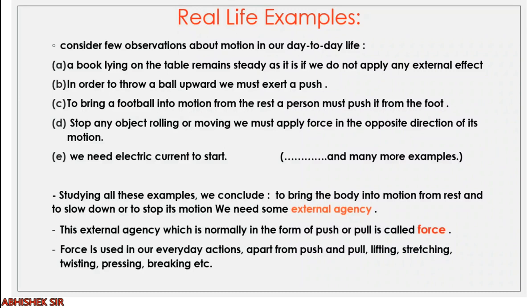To stop any object that is rolling, or to stop it from moving, we must apply force in the opposite direction of its motion. We also need electric current to start any electrical appliances like a fan, AC, any kind of motor, or generator. So there are many examples in which we can see that to bring a body into motion from rest, or to slow down or stop a body's motion, we need some external agency — normally in the form of a push or pull. That is why this push or pull is called force.